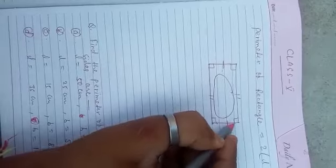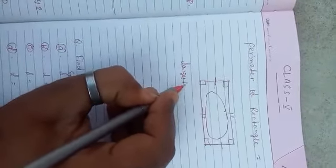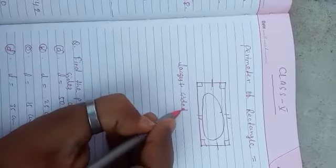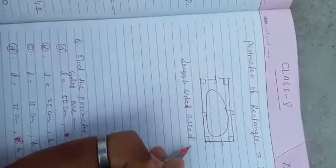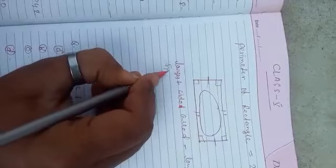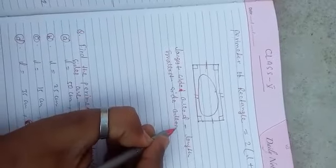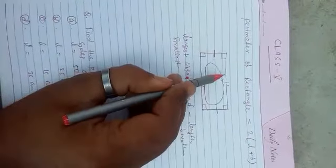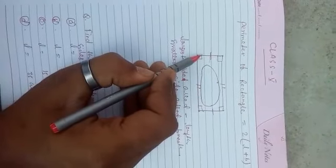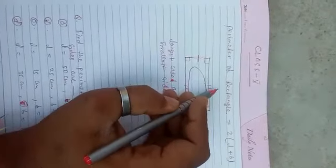The largest side is called length, and the smallest side is called breadth. These two sides are length and breadth. Let us denote length by the letter l and breadth by b.